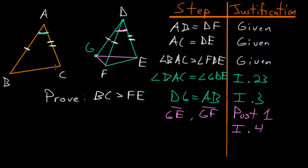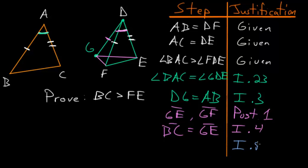This means base BC equals base GE of triangle GDE — so we can write that BC equals GE. If we now focus on triangle GDF, we can notice it's an isosceles triangle since it has two equal sides, so by Book 1, Proposition 5, the base angles are equal to each other.